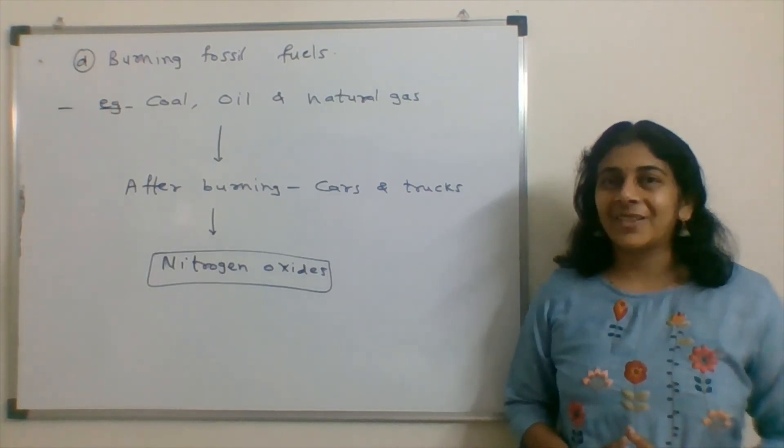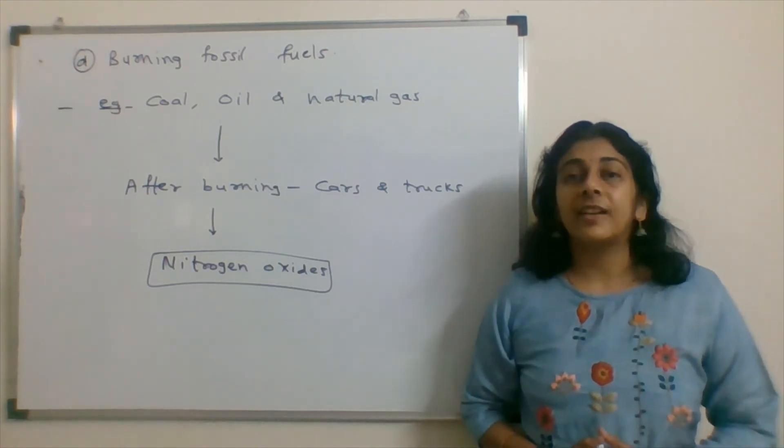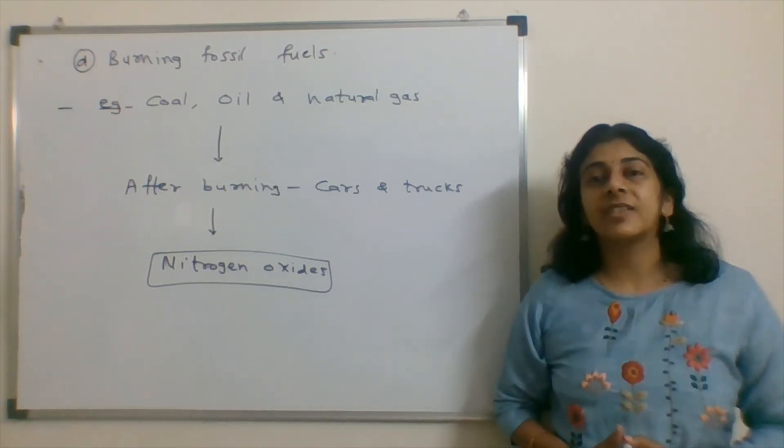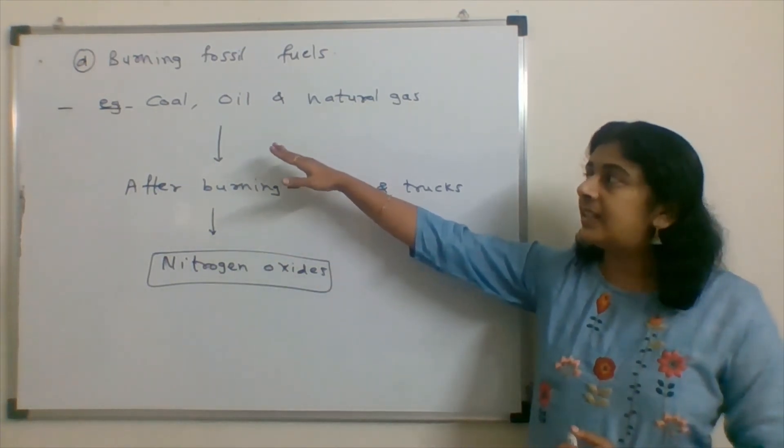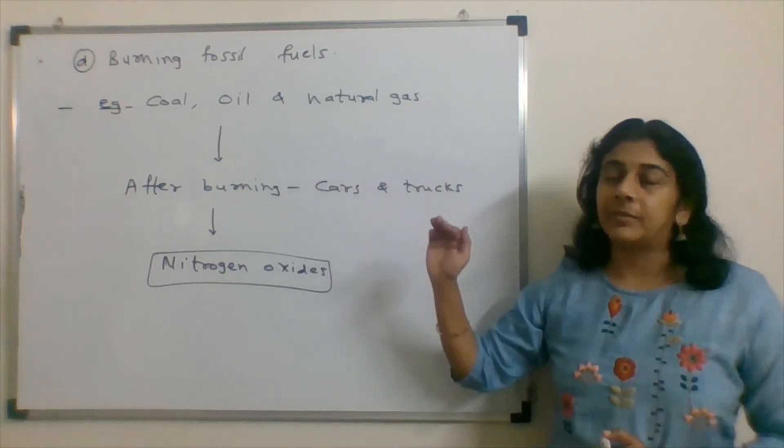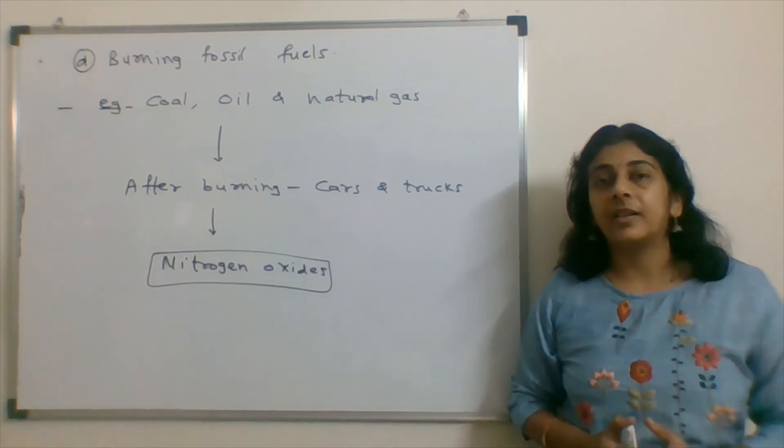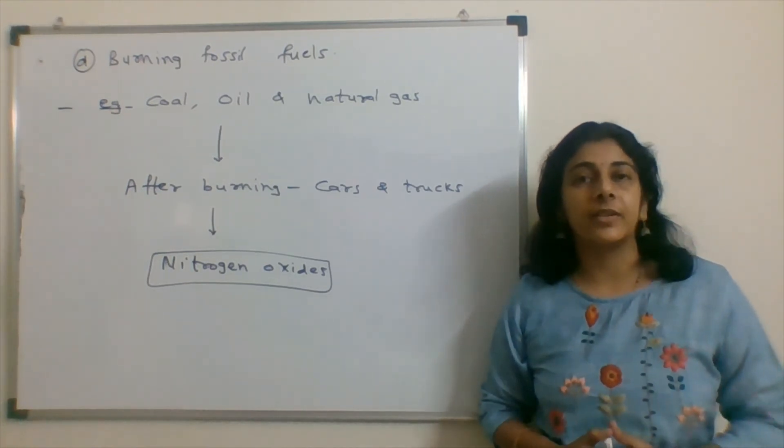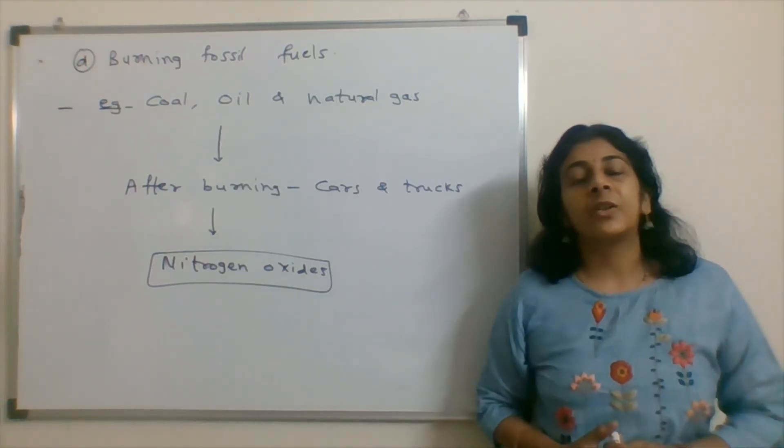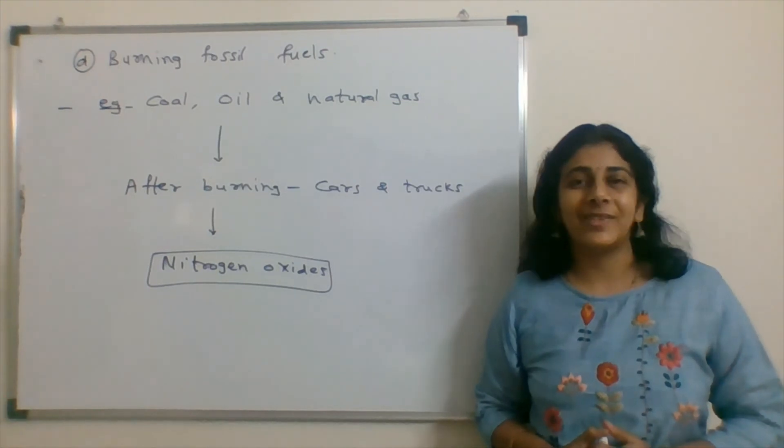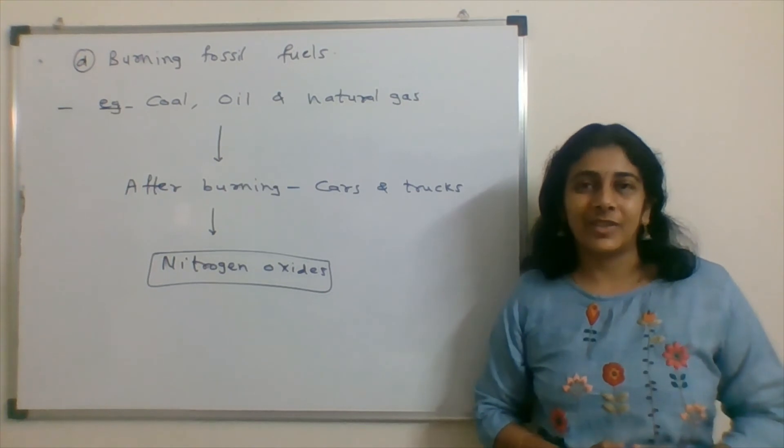Option D is burning fossil fuels. Fossil fuels are formed after fossilization of living stocks. These include coal, petroleum, oil and natural gases. When these are burnt in vehicles like cars and trucks, it produces nitrogen oxides. Nitrogen oxides are greenhouse gases. So, this process also favors the greenhouse effect.